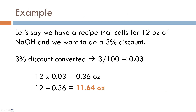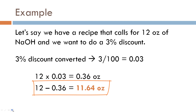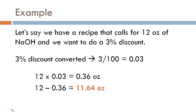Let's look at an example. Say we have a recipe that calls for 12 ounces of sodium hydroxide and we want a three percent discount. First, convert three percent to decimal format by dividing by 100, giving you 0.03. From here on, whenever I say take three percent, I've automatically converted it when plugging it into the formula. So: 12 ounces multiplied by 0.03 equals 0.36 ounces. Then take the total lye of 12 ounces, subtract 0.36, and our new lye amount is 11.64 ounces. That's how much lye we use in this recipe. Pretty simple.